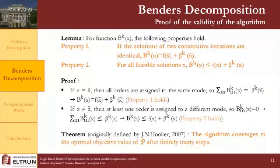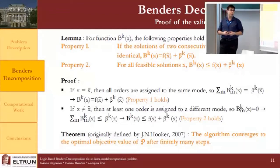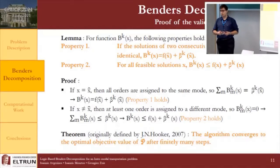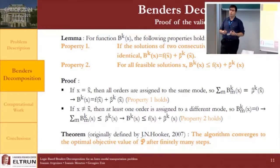Concerning the bounding function, two properties hold: if solutions of two consecutive iterations are identical, then b equals the sum of function f and the sub-problem objective value; and for all feasible solutions, this function is a lower bound of the sum of f and the sub-problem objective. The proof is based on: if the current solution equals the previous one, all orders are assigned to the same mode, so property one holds; if different, at least one order is assigned to a different mode, so property two holds. We conclude with an adaptation of the theorem originally defined by John Hooker, ensuring the algorithm converges to the optimal objective value of P in finitely many steps.